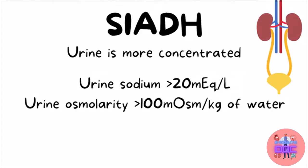In contrast, the urine becomes more concentrated because most of the water has been reabsorbed back into the blood, so very little water is lost in the urine. The increased solute concentration leads to elevated urine sodium levels — more than 20 mEq/L — and because solute concentration is high while water content is low, urine osmolality will also be more than 100 mEq/kg of water.